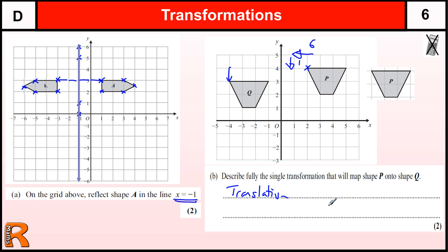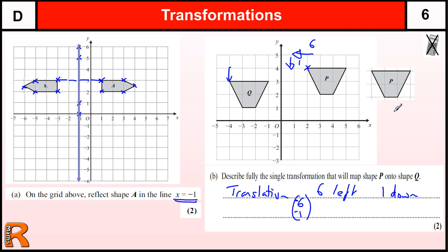Now you're allowed to say six to the left and one down. But technically, that's usually written as a vector - written as six over one, just like a coordinate but with no comma. That needs to be minus six in the vector because going to the left is negative, and one down is minus one. If it was going to the right that would be plus six, and up would be positive one. But as it's going to the left and down, they are negative directions, so it must be minus six, minus one.